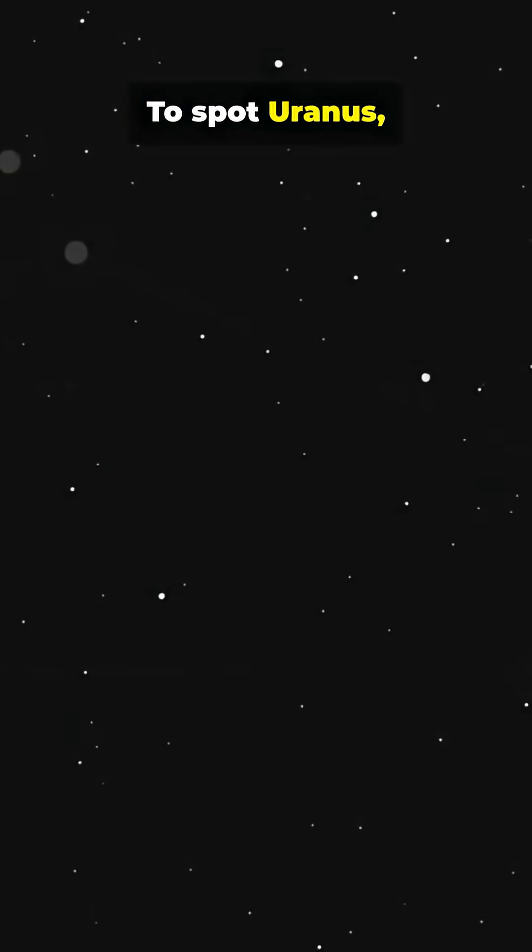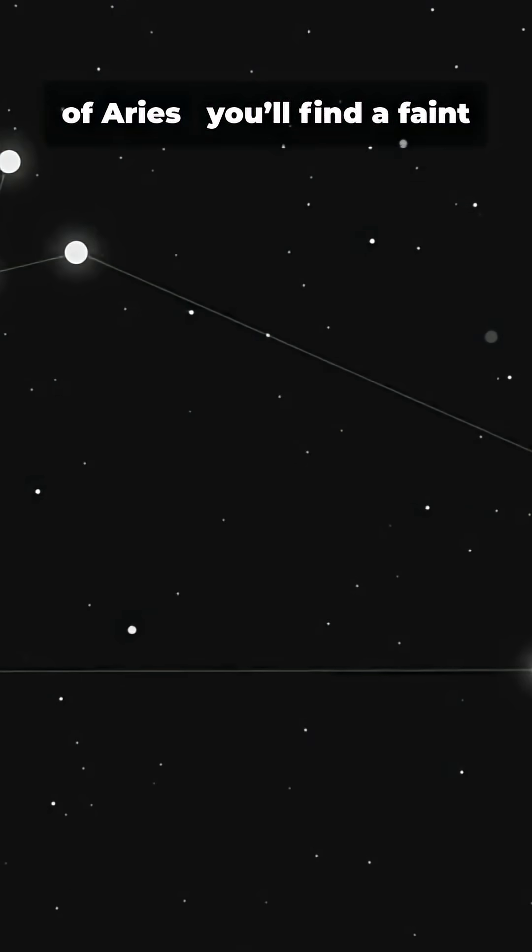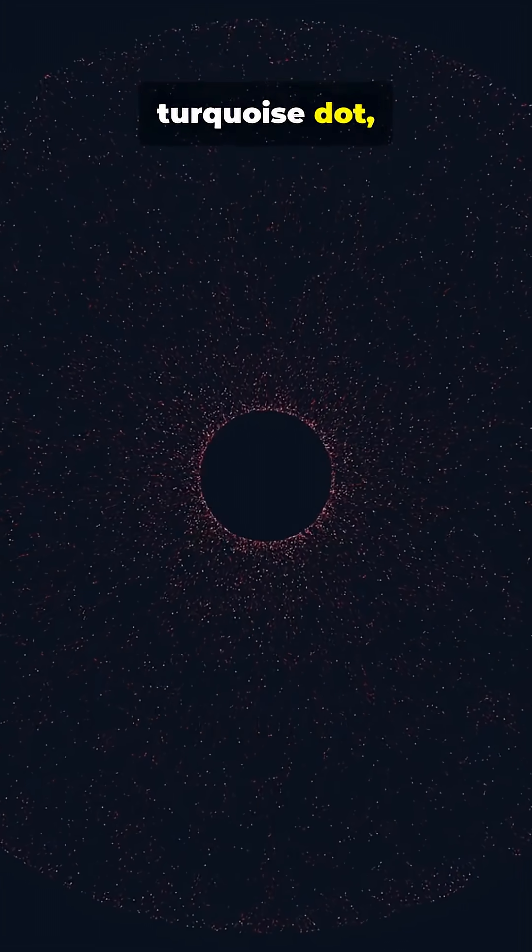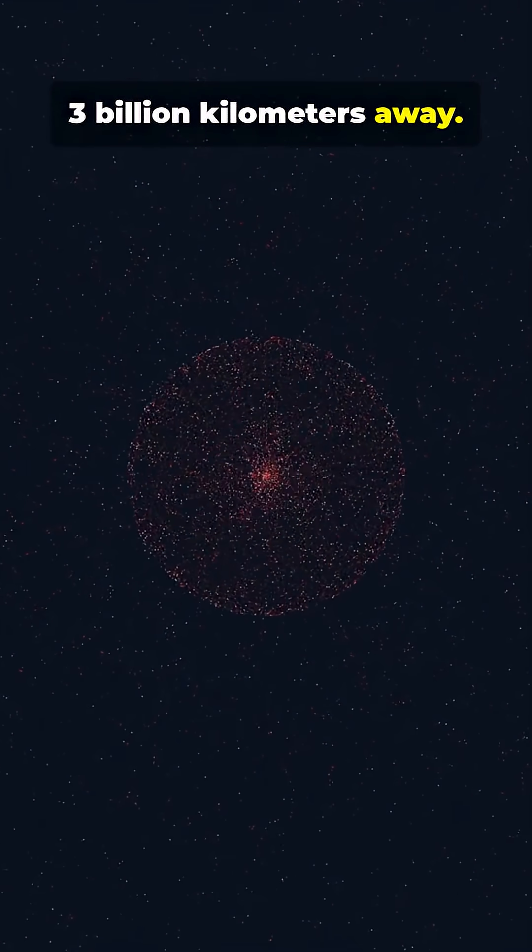To spot Uranus, aim binoculars near the stars of Aries. You'll find a faint turquoise dot 3 billion kilometers away.